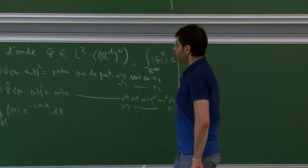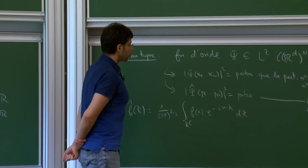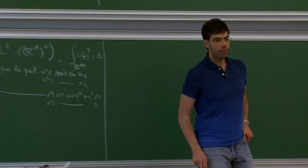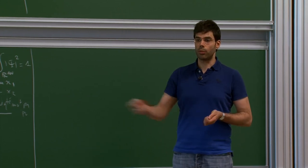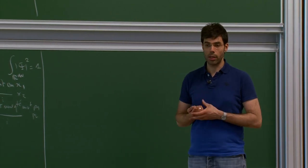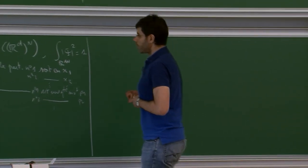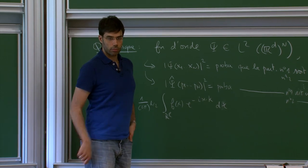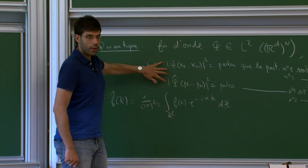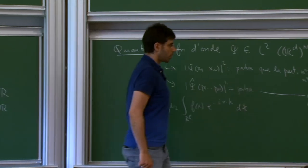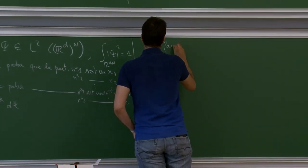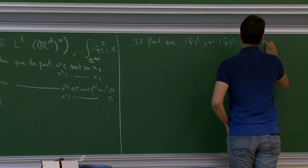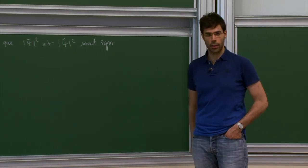What I have written is a bit strange, since I am putting labels on my particles, supposing I can know who is number 1 and follow it, who is number 2 and follow it — which is not very reasonable, since if we observe them at two different times, we won't know if it was really 1, 2, or 3, since they are indistinguishable. So this indistinguishable character — the fact that they are all the same — must be reflected in the fact that everything must be invariant if we change the order, if we change the numbering.